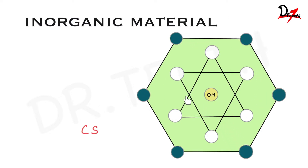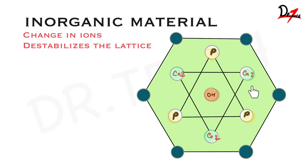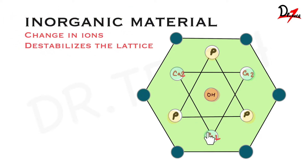We have a central core of hydroxyl ion, and around this we have triangular shapes. Here we have the phosphorus making one triangle, and we have the calcium making another triangle. Now, during the formation of enamel, magnesium can replace the calcium, and carbonate can replace the hydroxyl.